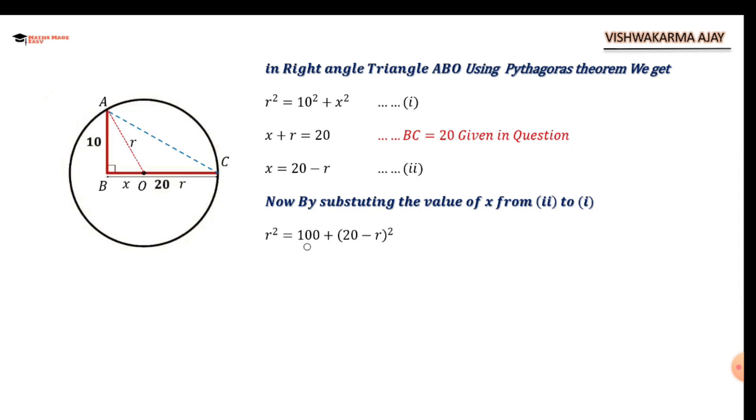R² = 100 + (20 - R)². I'm going to use the formula of (A - B)², that is A² - 2AB + B². So we have 100 + 400 - 40R + R². As you can see, R² is on both sides of the equation - on the right hand side and also on the left hand side.